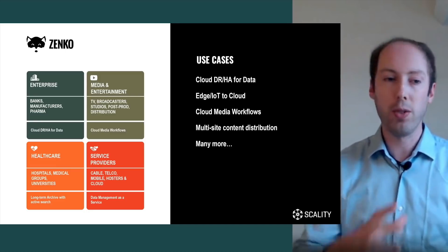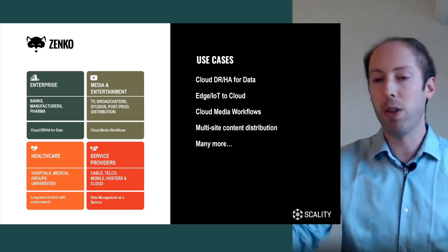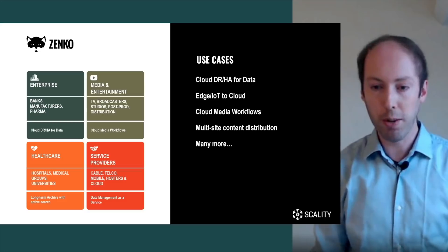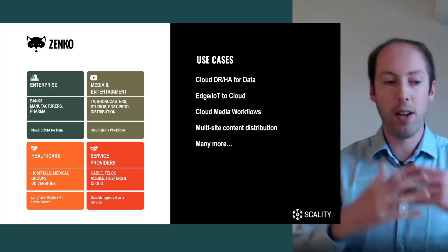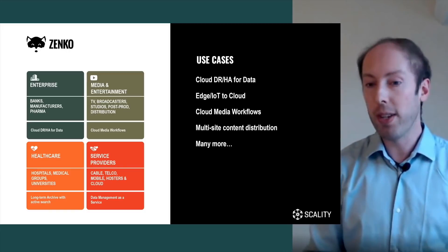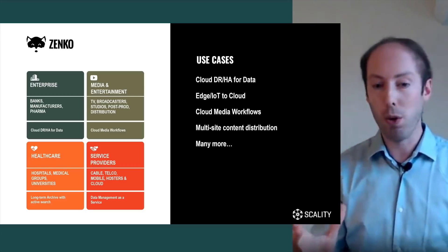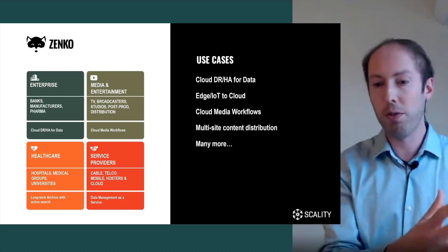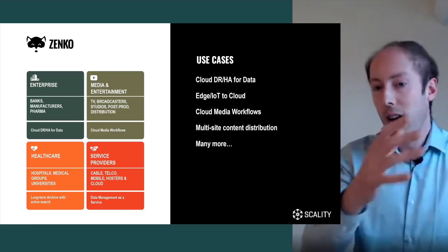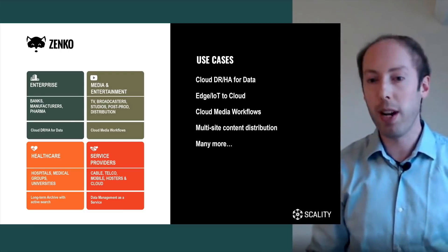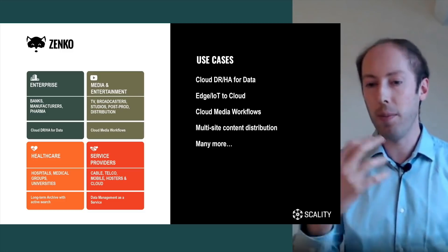Zenko plays a role to make sure data flows throughout various pipelines, eventually ending up in a CDN — a content distribution network — which supports multi-site content distribution. This can be to bring data close to customers, or for example, if you have people across the globe working on a piece of data in their respective time zones, Zenko can make sure the data gets transferred to the right location so everyone has access to local copies during working hours.